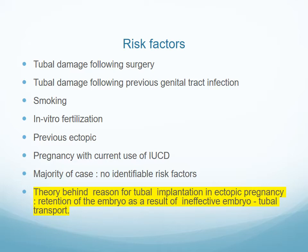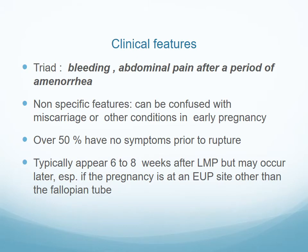The theory behind tubal implantation in ectopic pregnancies is believed to be due to retention of the embryo as a result of ineffective embryo-tubal transport. Clinical features are a triad of signs and symptoms: vaginal bleeding, abdominal pain after a period of amenorrhea. These signs are non-specific, as they can also be found in other early pregnancy conditions such as miscarriage.